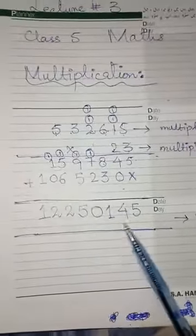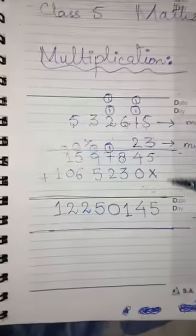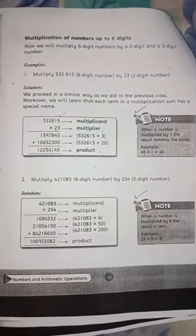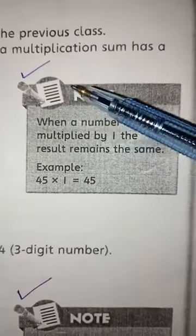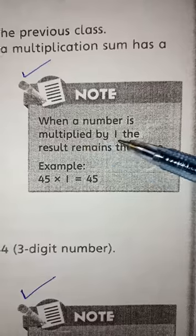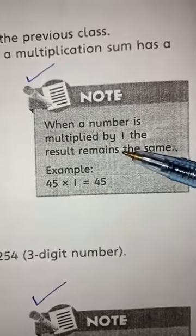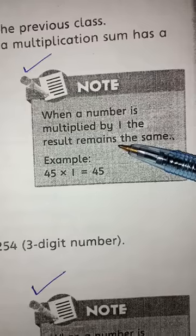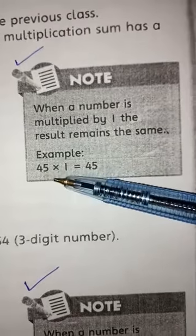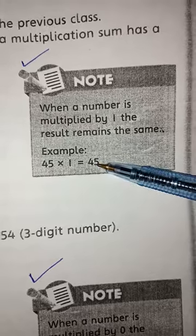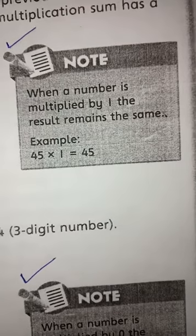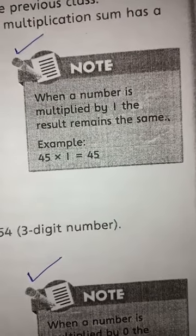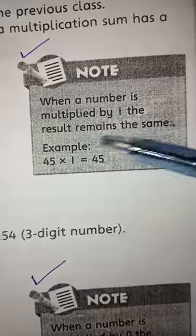Now the final answer we have is our product. This is how you can solve multiplication. You should solve all the multiplication questions in your book. Here we have some notes written. Let's see what's written. The first note says when a number is multiplied by 1 the result remains the same. This means whenever you multiply any number by 1, the answer is always the same. For example, 45 ones are 45. Let's take any other digit like 4. 4 ones are 4. 6 ones are 6.